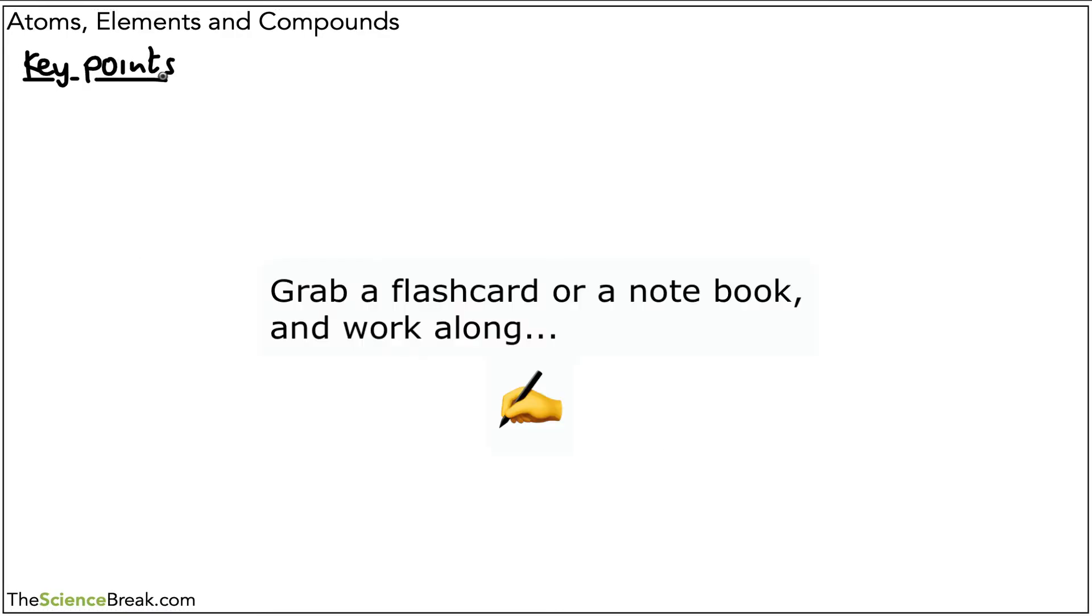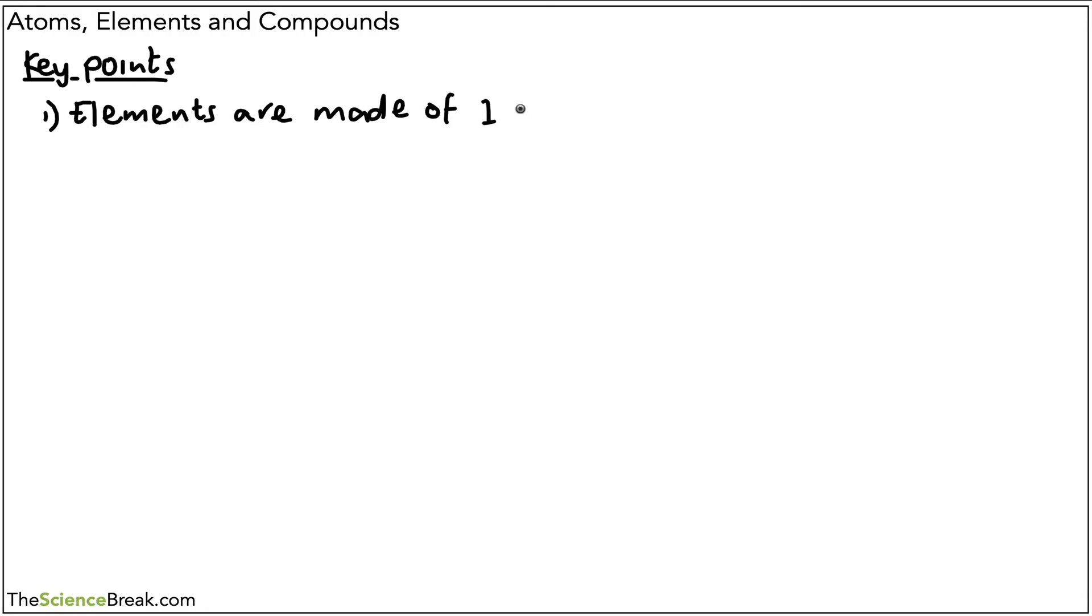So let's just make a note of the key points that we've covered in this video. Number one, elements are made of one type of atom only. One type of atom only. Two examples we looked at were that of sodium, a solid metal. There's our sodium as an example. And another example was chlorine gas, made of pairs of atoms. There's our chlorine.